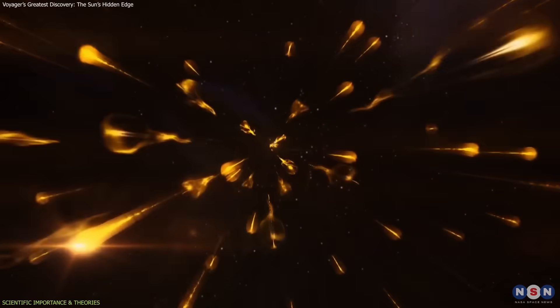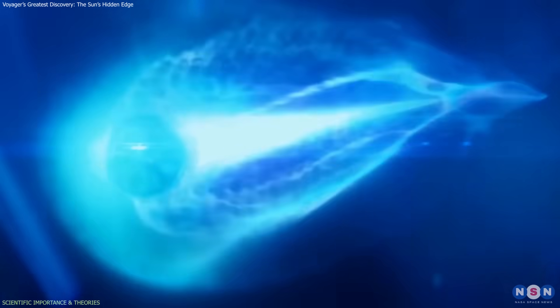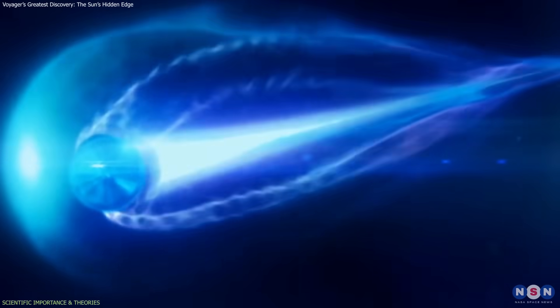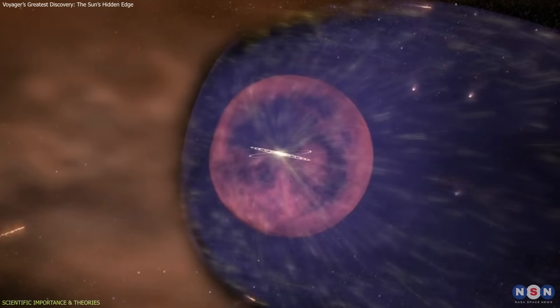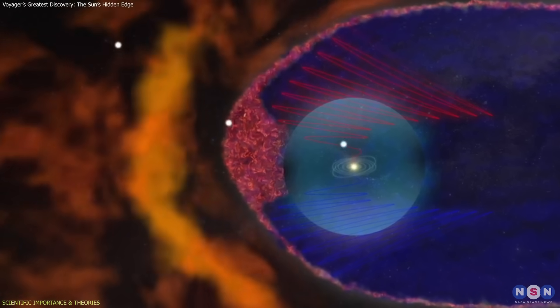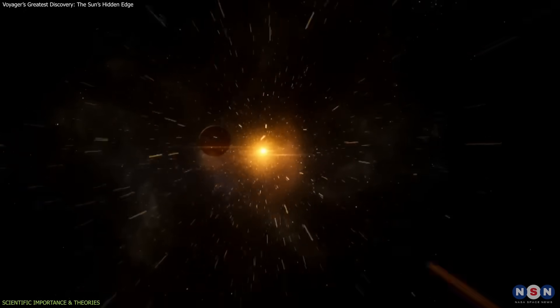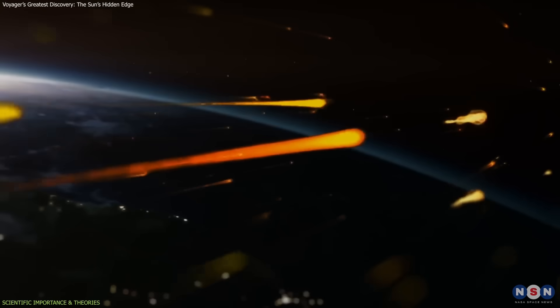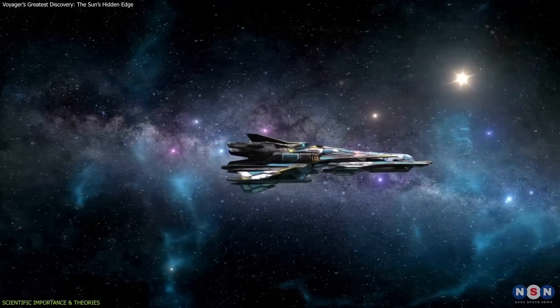The data also helped refine how cosmic rays, high-energy particles from outside the solar system, penetrate our heliosphere. It acts like a semi-permeable barrier. Most cosmic rays are deflected, but some seep through depending on solar activity. This directly affects the radiation environment throughout the solar system, including around Earth and future human missions to deep space.